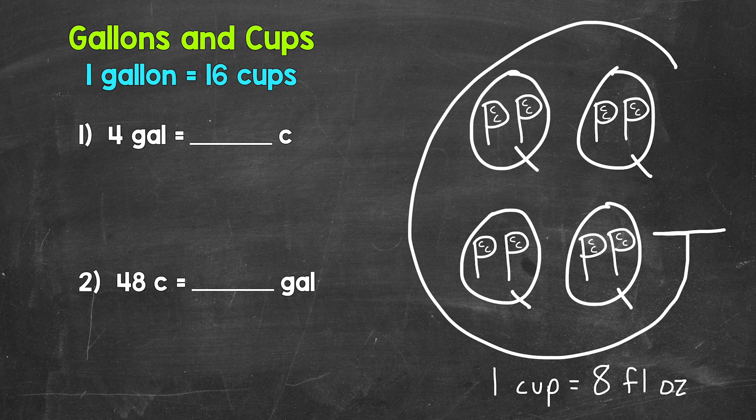To start, there are 16 cups in a gallon. In other words, one gallon equals 16 cups. And I have a big G over here representing a gallon to help us with capacity conversions. And we can see that we have 16 cups within that G. So that shows us 16 cups equals a gallon.